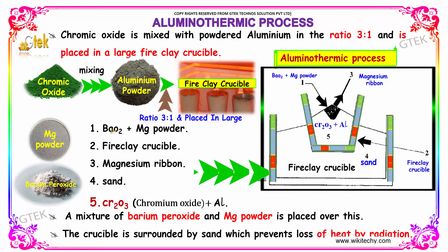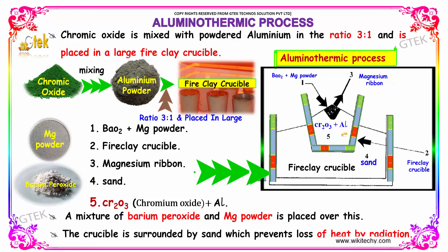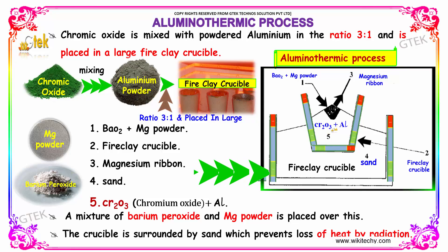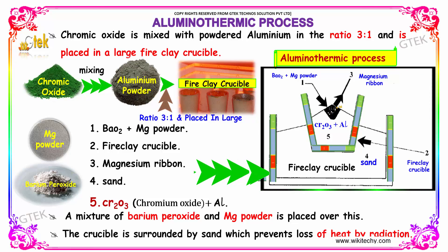The mixing arrangement involves Barium Oxide and Magnesium Powder with a Magnesium Ribbon, the fire clay crucible, and Sand. You have Sand here, and Chromic Oxide and Aluminum here. A mixture of Barium Peroxide and Magnesium Powder is placed on top of this.